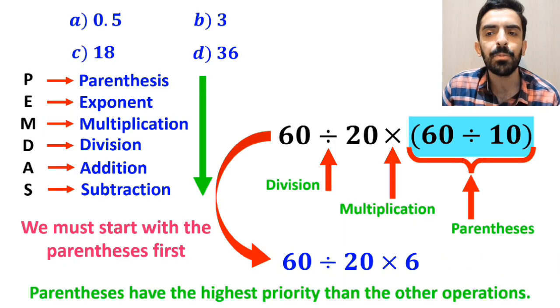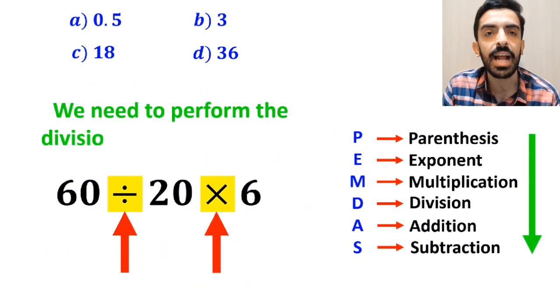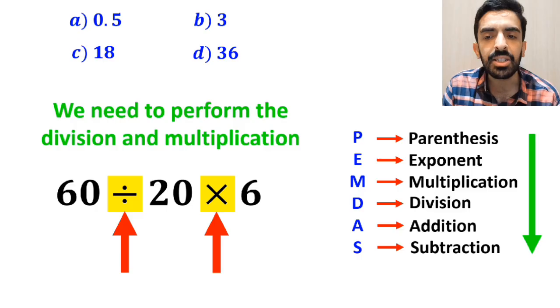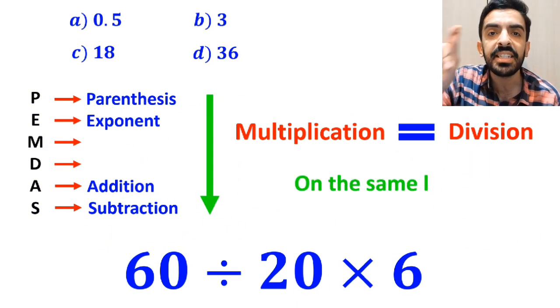So we can write this expression as 60 divided by 20 then times 6. Now we need to perform the division and multiplication. However, it's very important to keep in mind that multiplication and division are on the same level of precedence.